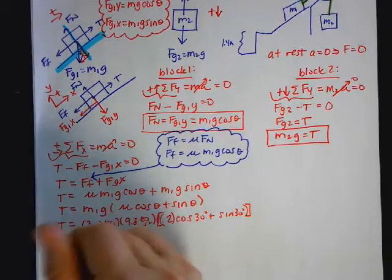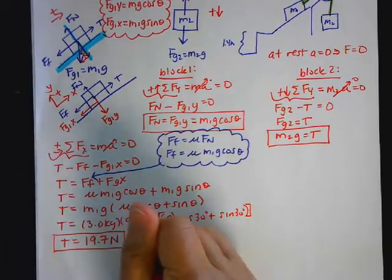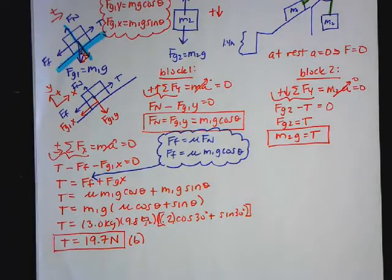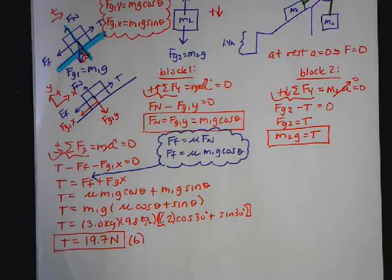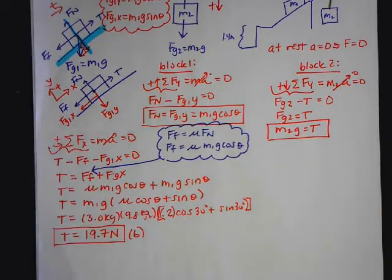Now that was actually the answer for part B. If we did it as a system, we could find part A first, because when you do it that way, you would be eliminating the tension, because the tensions are equal and opposite. We're doing it this way because on the FRQs, sometimes they ask you to apply Newton's second law to each block individually, and that's what doing it this way means.